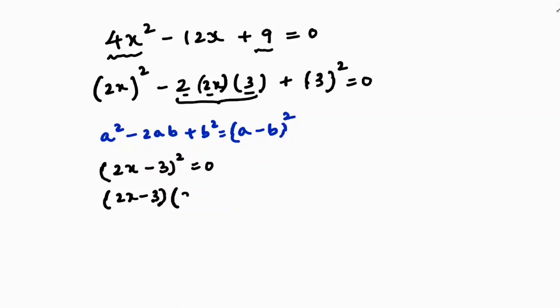So 2x minus 3 equals 0, so 2x equals 3, so x equals 3 by 2. Same thing: 2x equals 3, x equals 3 by 2. So the zeros are 3 by 2 comma 3 by 2.